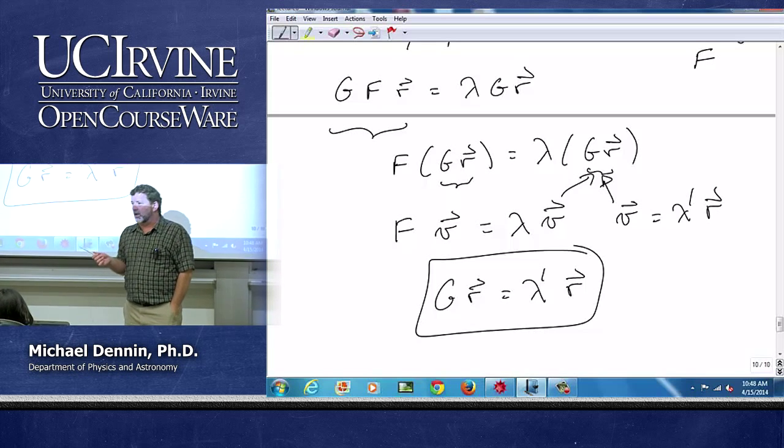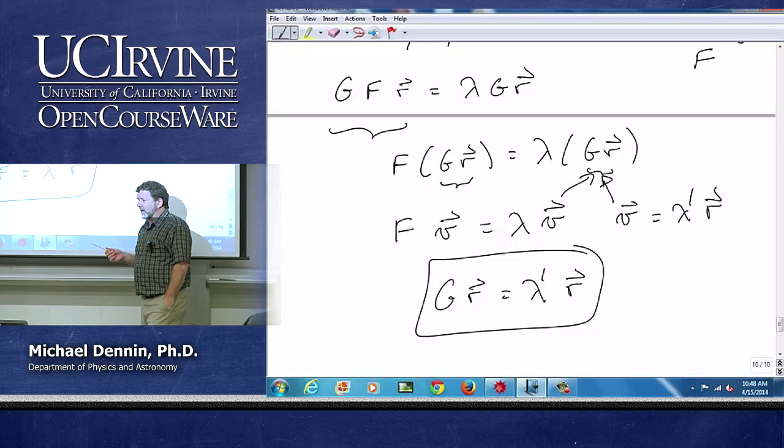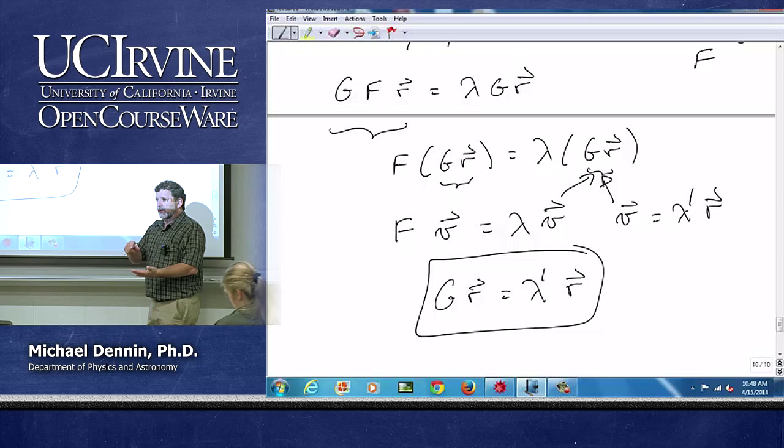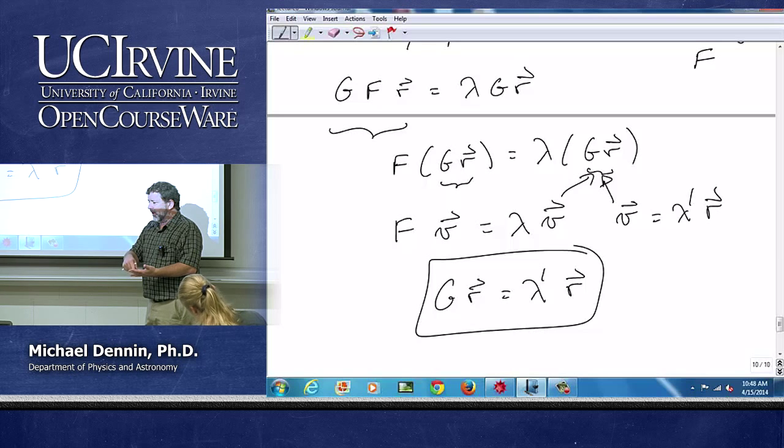why, how many of you have done, you know, the quantum numbers of the hydrogen atom, right? The hydrogen atom we talk about N, L, and M right? The only reason you talk about N and L, angular momentum and N, is because angular momentum commutes with the energy